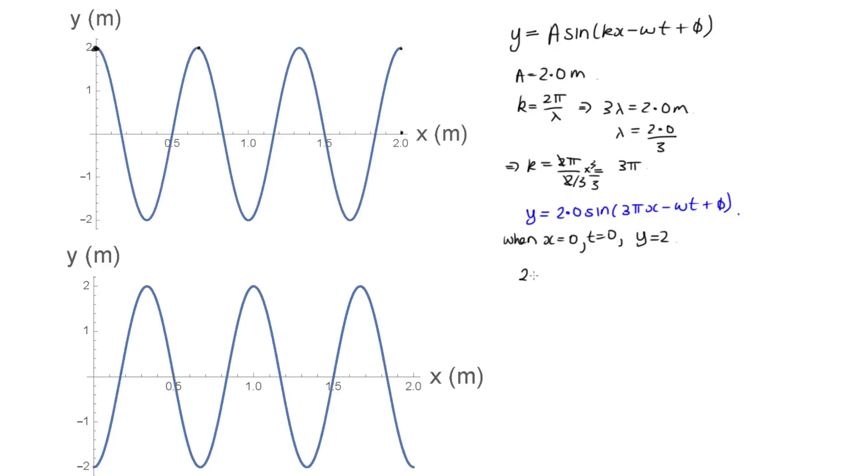So we can substitute that into this blue equation that we've just derived now, so we know that 2 is equal to 2 sine 3 pi, now x we've said was 0 at this point, we know that t is 0, so this is minus omega times 0 plus phi. And so we've got 1 is equal to sine phi, so that tells us that phi is equal to 90 degrees, which is equal to pi on 2 radians. So we've now also got this phi, so we've got y is equal to 2 sine 3 pi x minus omega t plus pi on 2.